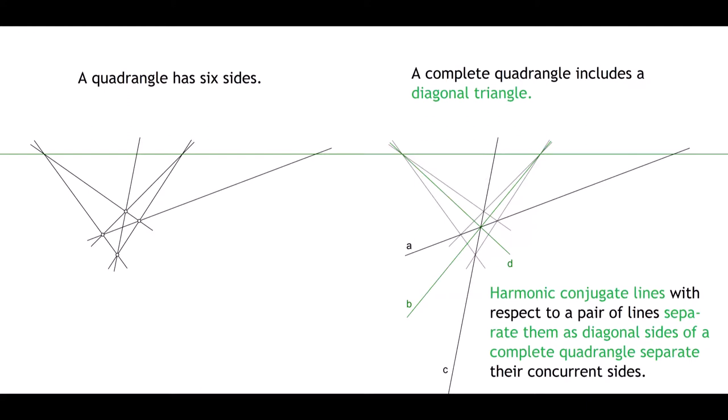But this is the same as to say, the lines connecting a point with the vanishing points and the diagonal vanishing points in two-point perspective, which, as we saw, form a harmonic range.